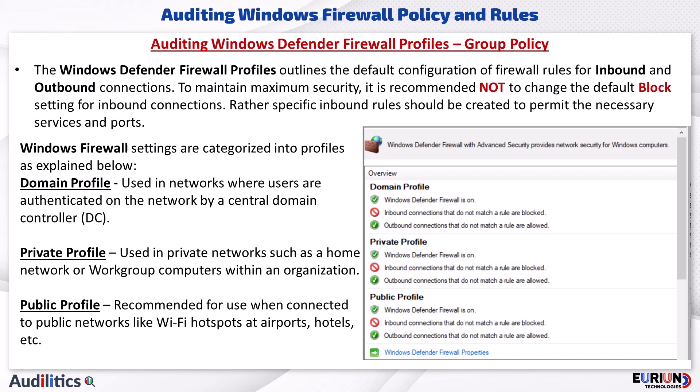Windows Firewall settings are categorized into three main profiles. The Domain Profile is the default profile in environments where users are authenticated on the network by a central domain controller, and is automatically activated when a workgroup computer is joined to an Active Directory domain. The Private Profile is used in private networks such as a home network or workgroup computers within an organization. The Public Profile is recommended for use when connected to public networks like Wi-Fi hotspots at airports or hotels.